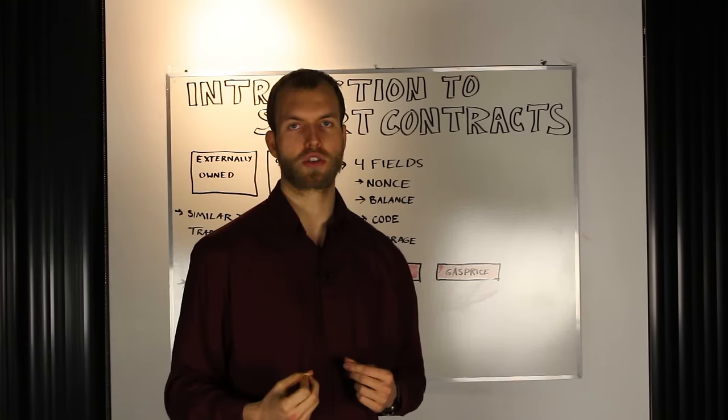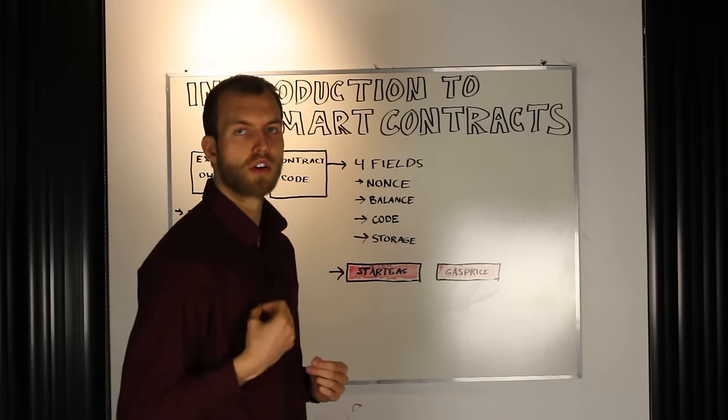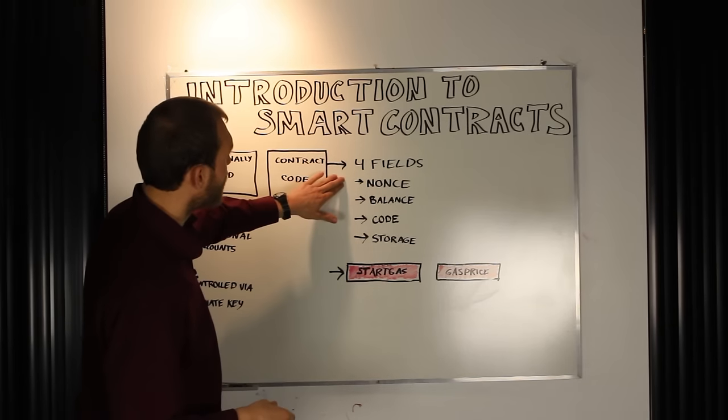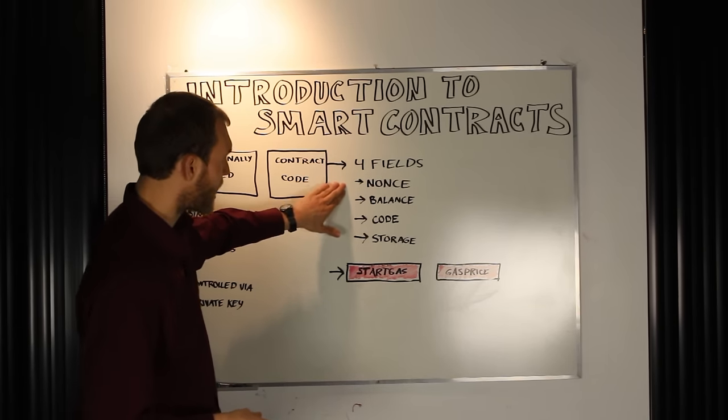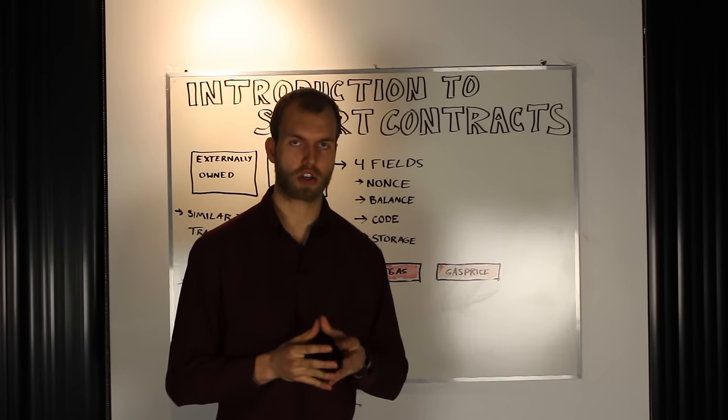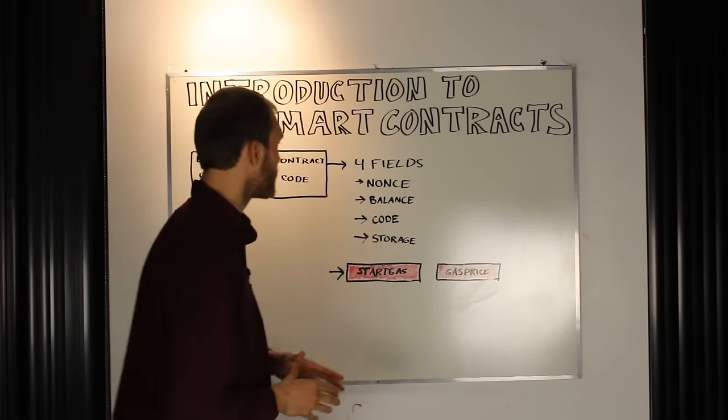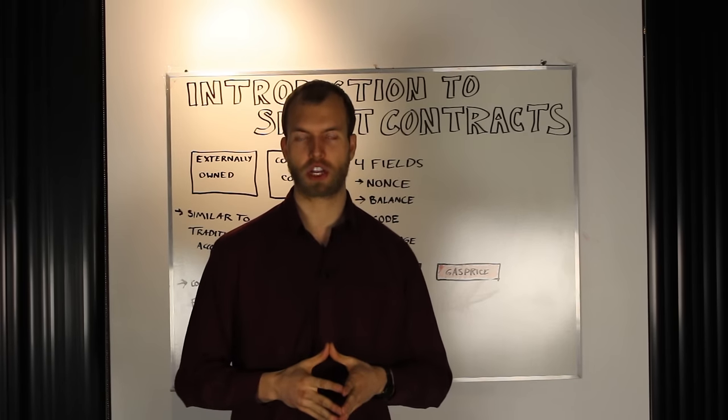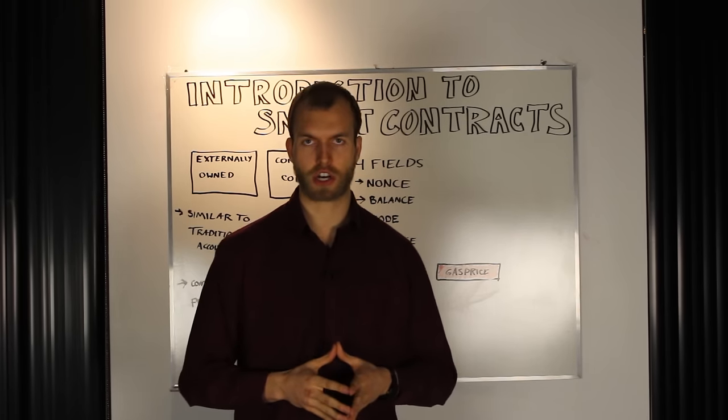Now, this message or transaction from the externally owned account will usually contain four fields that help to construct the smart contract. The first field is the nonce, which is a cryptographic verification of the smart contract.